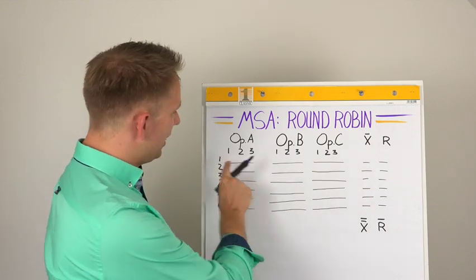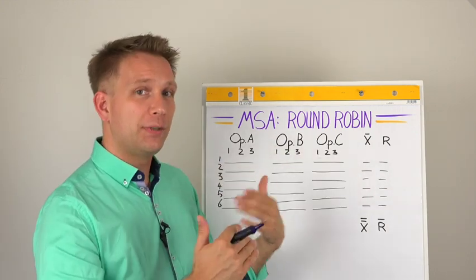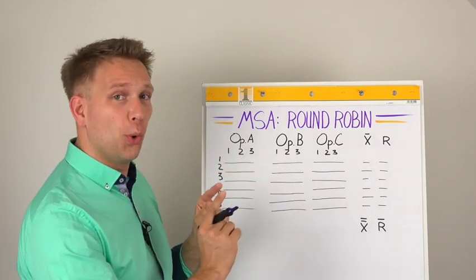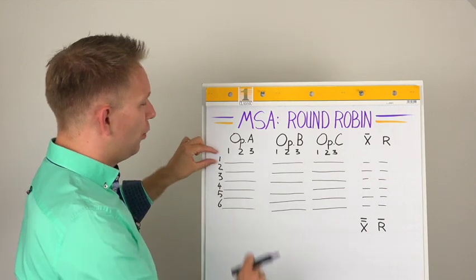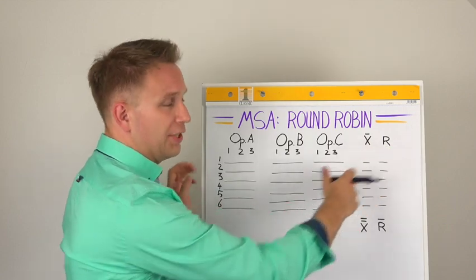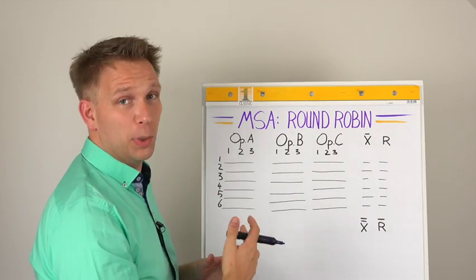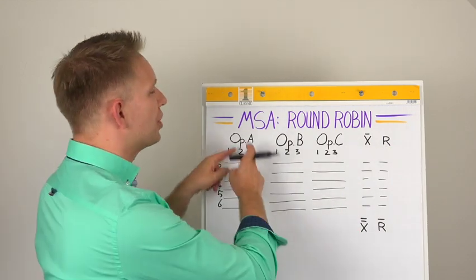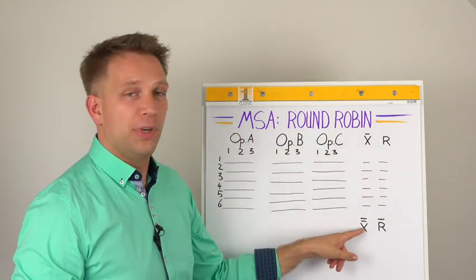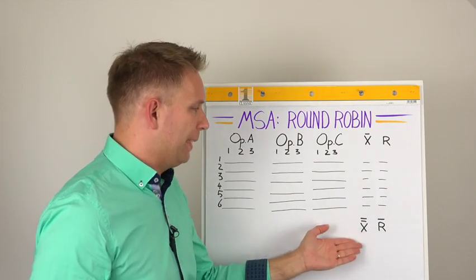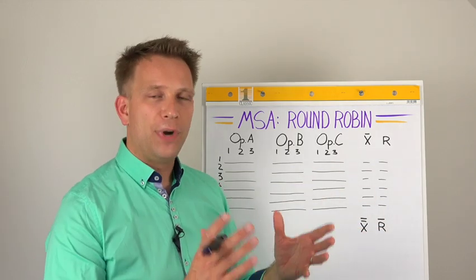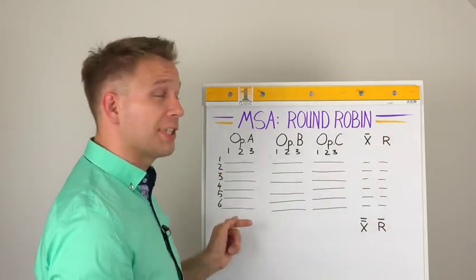What you then do is for each of these samples, the operators get them in different orders, and even between the trials preferably in different orders. You put them back in order and for all the sample number ones you calculate the average and the range, that is the highest minus the lowest. By the way, you also do the same per operator, and then you calculate from that the average value, so basically the average of all these samples, but also the average range that you get when you check these ranges for each of the samples.